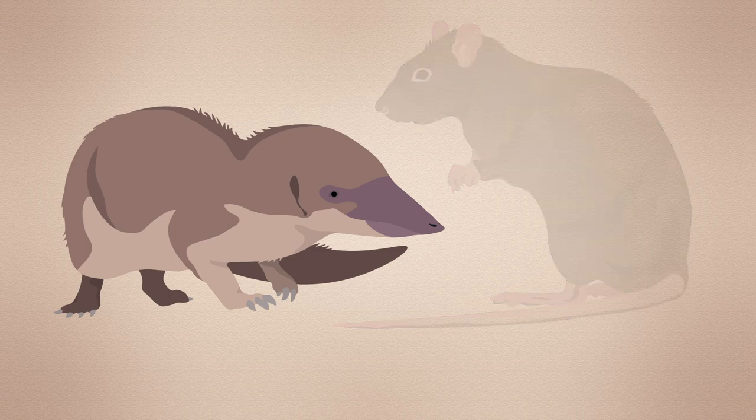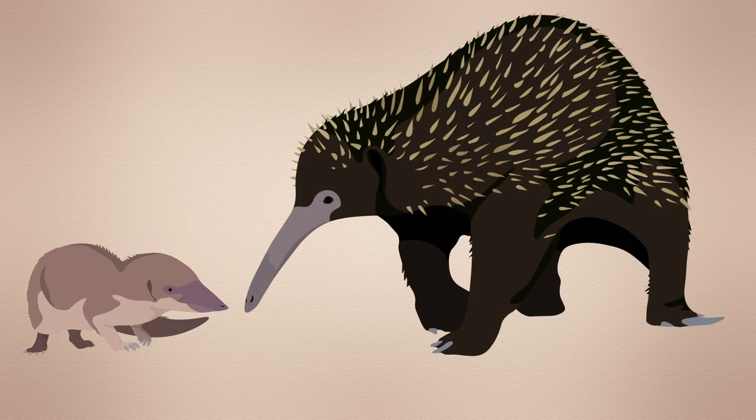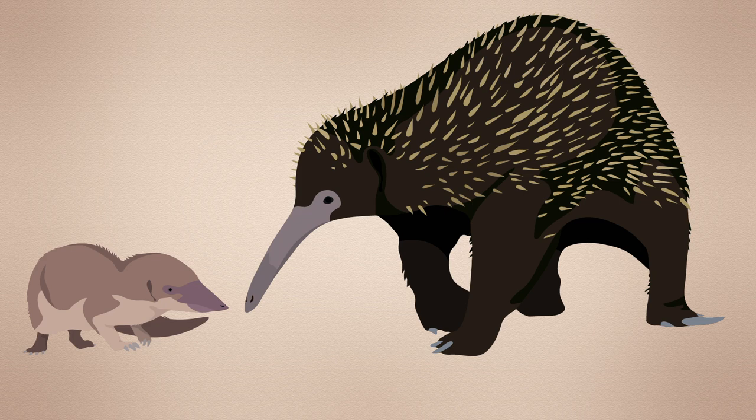Compared with the huge, toothless, long-beaked echidnas of today, some reaching weights of more than 10 kilograms, the idea that they have remained unchanged starts to wobble.